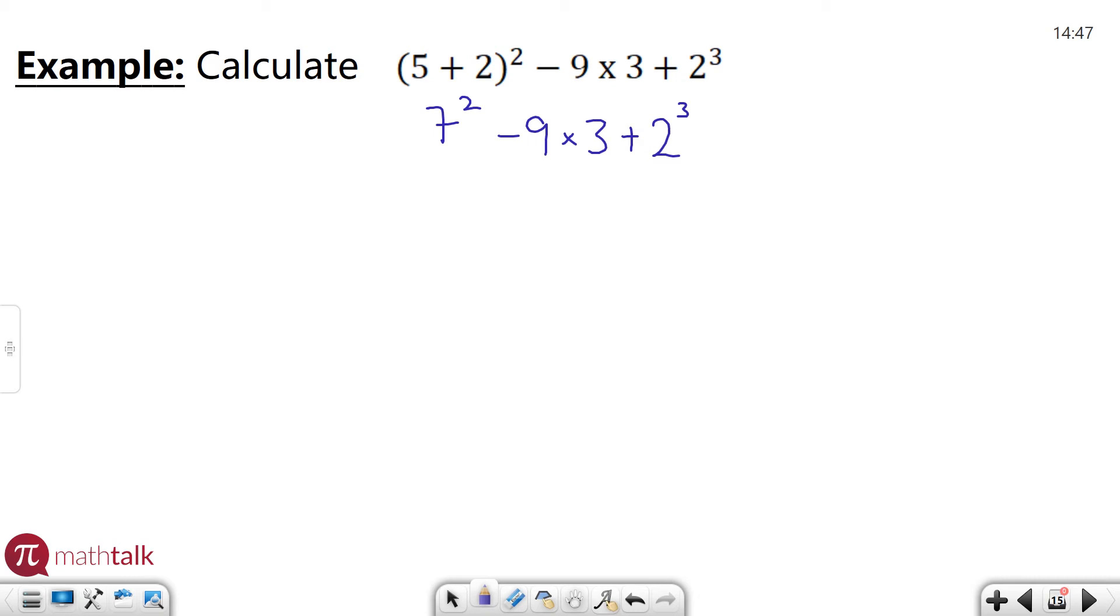I have two different values with exponents, so I need to take care of those first. Seven squared is 49, and two to the third is two times two times two, which is eight.